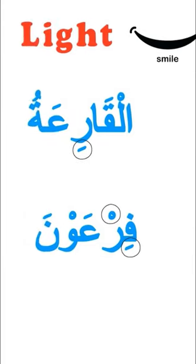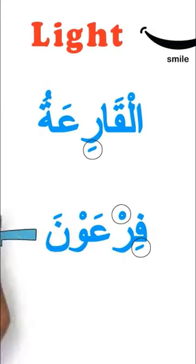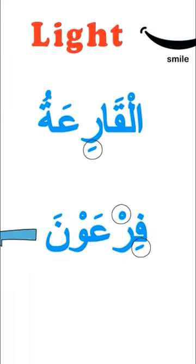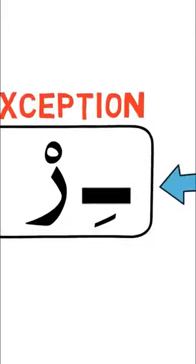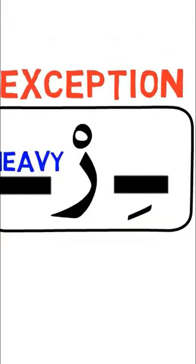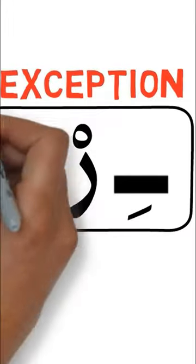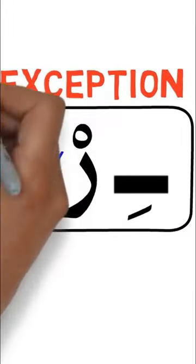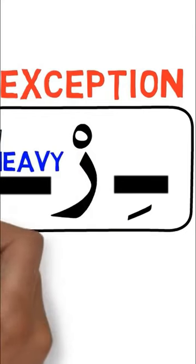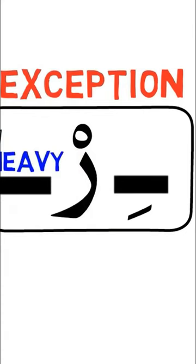Here is an exception. If the Ra has a Sukun and the letter before it in the same word has a Kasra, but the letter after the Ra is a heavy letter and doesn't have a Kasra, it is pronounced heavy. For example, we see a Ra with a Sukun. We look at the previous letter — it has a Kasra, so it appeased the Ra.